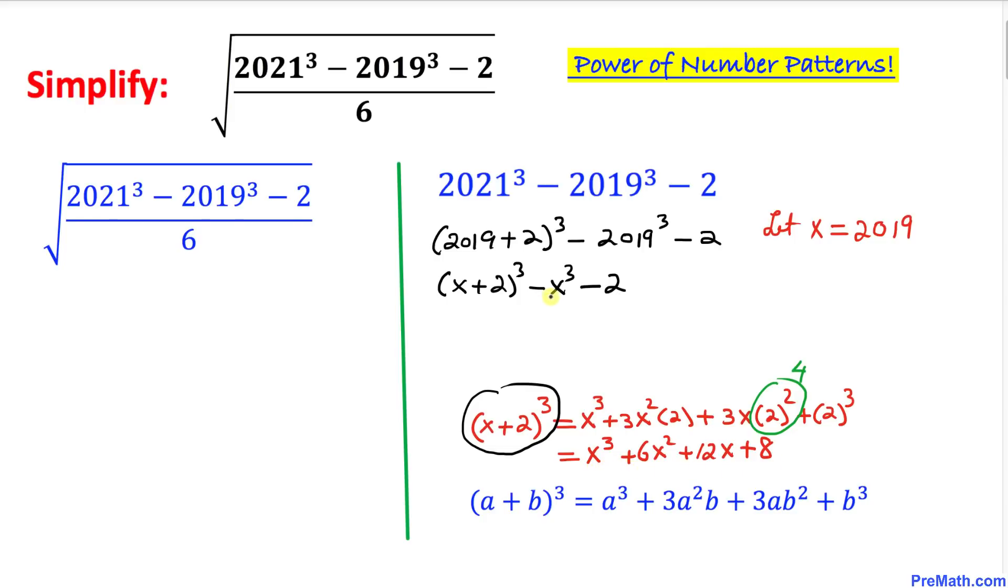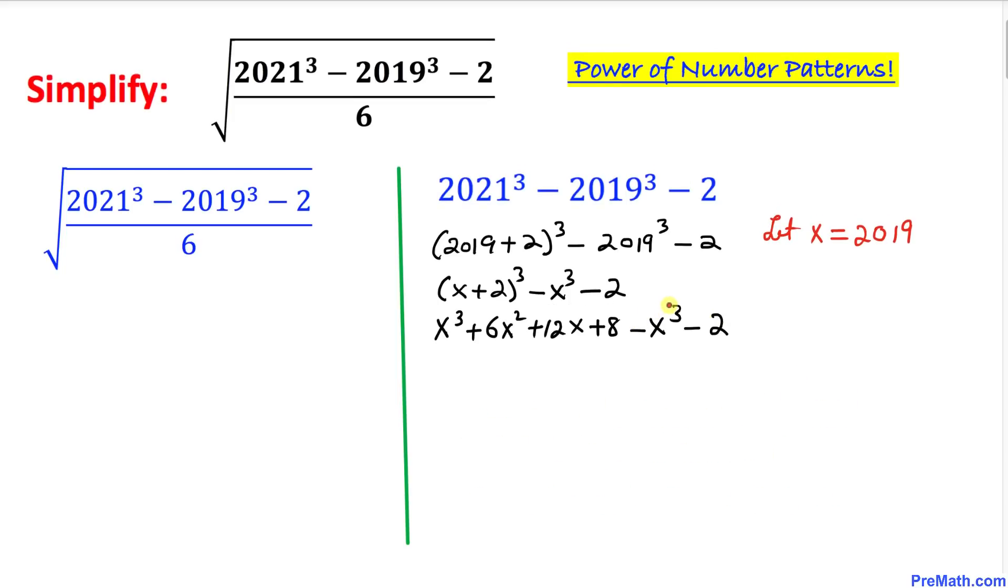Let's go ahead and fill in the blanks over here. I can replace this: x³ plus 6x² plus 12x plus 8 minus x³ and minus 2. Now as we can see, this negative x³ and this positive x³ are gone, so we ended up with 6x² plus 12x, and 8 minus 2 is going to give us positive 6.